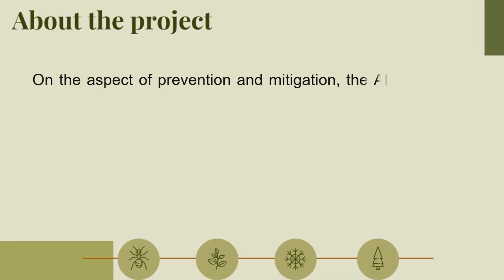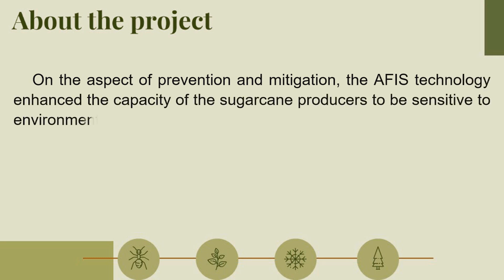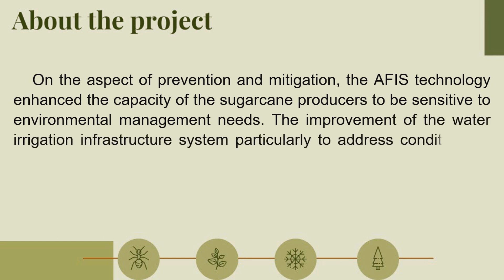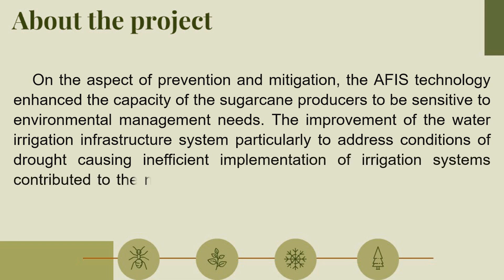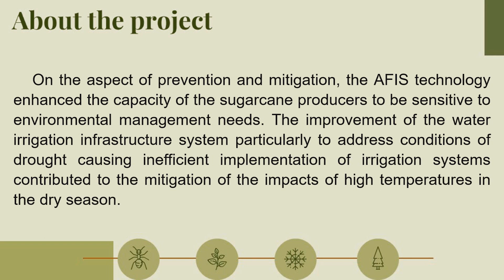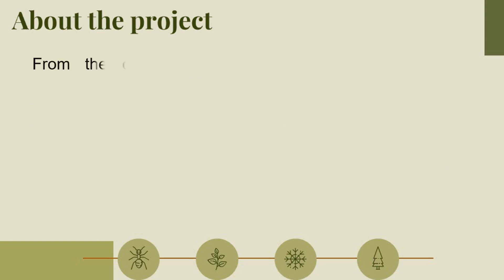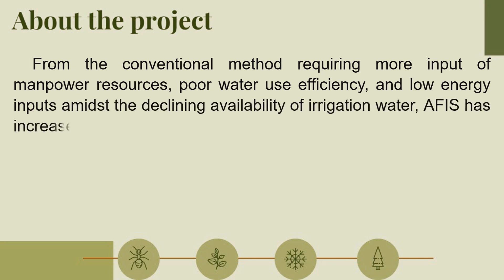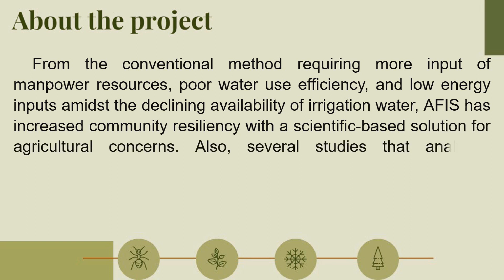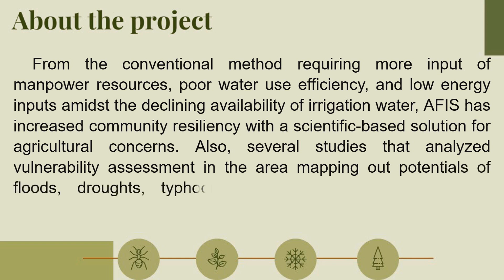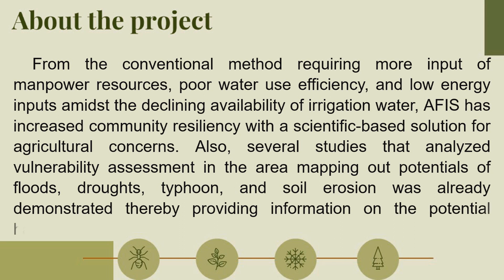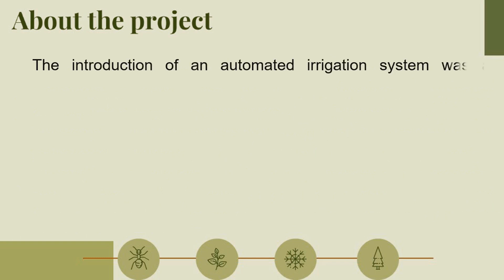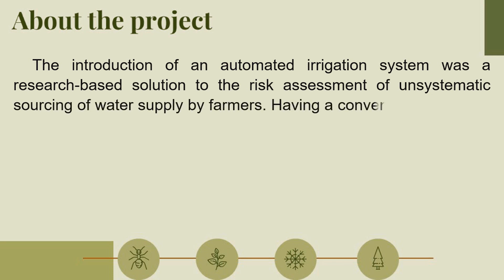On the aspect of prevention and mitigation, AFIS technology enhanced the capacity of sugarcane producers to be sensitive to environmental management. The improvement of the water irrigation infrastructure system, particularly addressing conditions of drought causing inefficient implementation of irrigation systems, contributed to the mitigation of the impacts of high temperature in the dry season. AFIS increased community resiliency with a scientific-based solution, replacing conventional methods that required more manpower, poor water use efficiency, and low energy inputs. Studies mapping out potentials of floods, droughts, typhoons, and soil erosion provided information on potential hazards in the community, and the introduction of AFIS was a research-based solution to unsystematic sourcing of water supply by farmers.